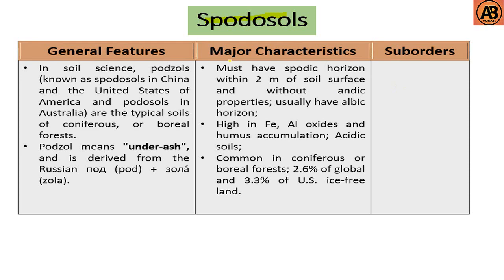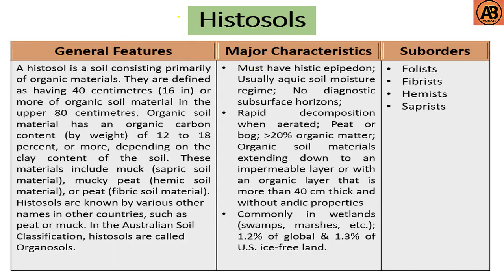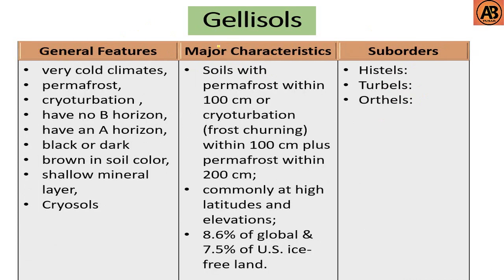Spodosols have no listed sub-orders, but here are their major characteristics and general features. The sub-orders of Histosols are Folists, Fibrists, Hemists, Saprists, etc. Here are the major characteristics and general features of Histosols.